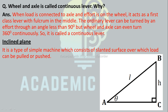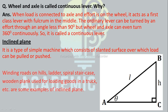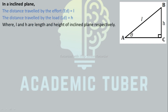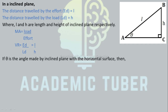Inclined Plane: it is a type of simple machine which consists of a slanted surface over which a load can be pulled or pushed. Examples: winding roads on hills, ladder, spiral staircase, wooden plank used for loading goods in a truck, etc. In an inclined plane, the effort distance ED equals the length L, and the load distance LD equals the height H of the inclined plane. VR = ED / LD = L / H. If θ is the angle made by the inclined plane with the horizontal, then sin θ = H / L = 1 / (L/H) = 1 / VR. Therefore VR = 1 / sin θ.